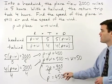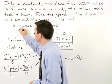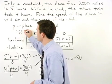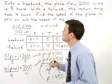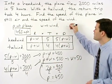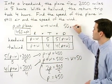So the speed of the plane is 450 miles per hour and the speed of the wind is 50 miles per hour.